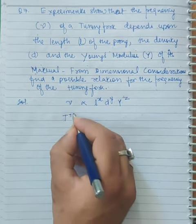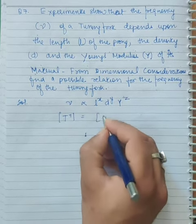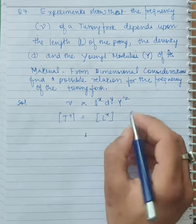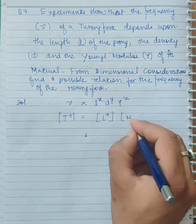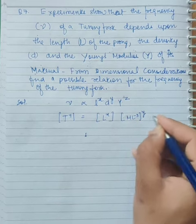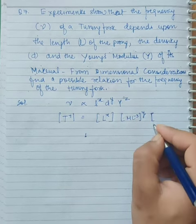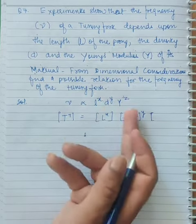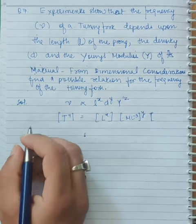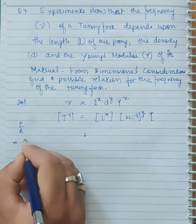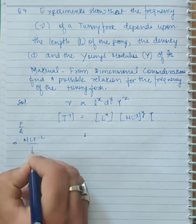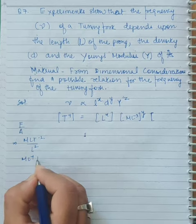Frequency has dimensions T to the power minus 1. Length L has dimensions L. Density has dimensions M L to the power minus 3. Young's modulus Y, which is pressure, has units of force upon area: M L to the power minus 1 T to the power minus 2.